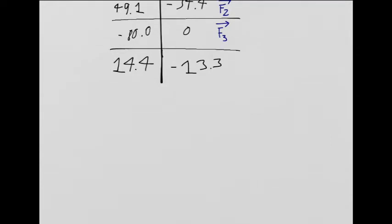Now, let's put those values in the triangle. Since the X is positive, it's going to go to the right of the origin, and since the Y is negative, it's going to go down. So, 14.4 and negative 13.3, and let's complete the triangle.